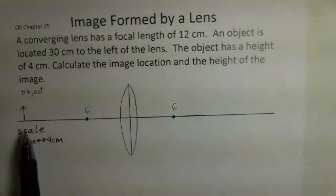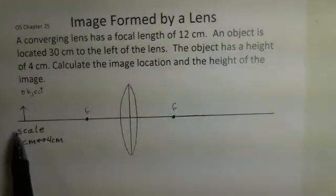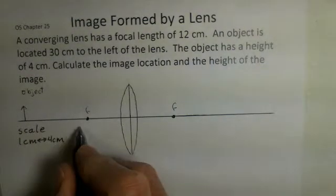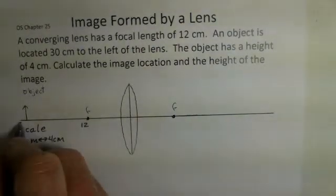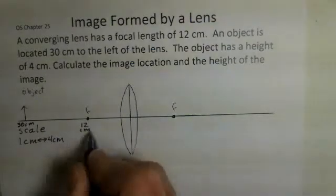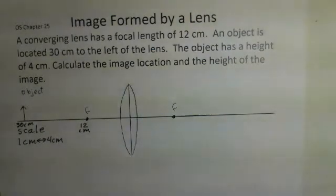We have an object that's 30 centimeters off to the left. 12 centimeters to the focal point, 30 centimeters to the object position, and we have a height of 4 centimeters.